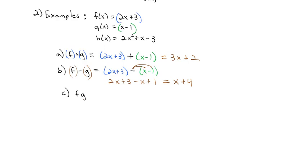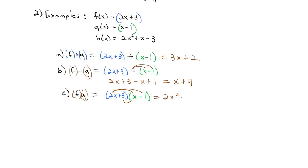We can also multiply the functions: (f · g)(x). We need to put these in parentheses as we multiply them together. So f is (2x + 3) times g, which is (x − 1). To simplify, we FOIL this out: 2x² − 2x + 3x − 3. Combining like terms in the middle, we have 2x² + x − 3.